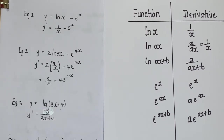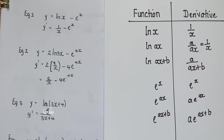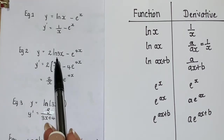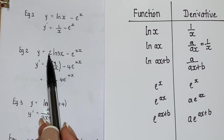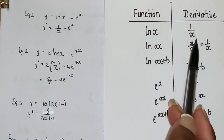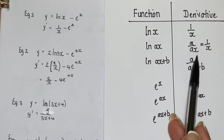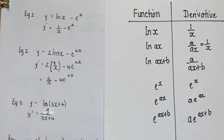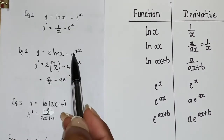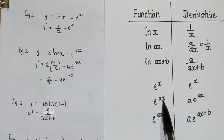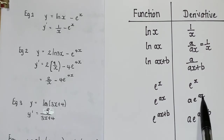In Example 2, we have y = 2·ln(3x) − e to the 4x. For ln(3x), differentiating gives 3 over 3x, which simplifies to 1 over x — so we get 1 over x in brackets, multiplied by the 2 outside. For e to the 4x, following the exponential format, we get 4e to the 4x. So our simplified answer is 2 over x minus 4e to the 4x.